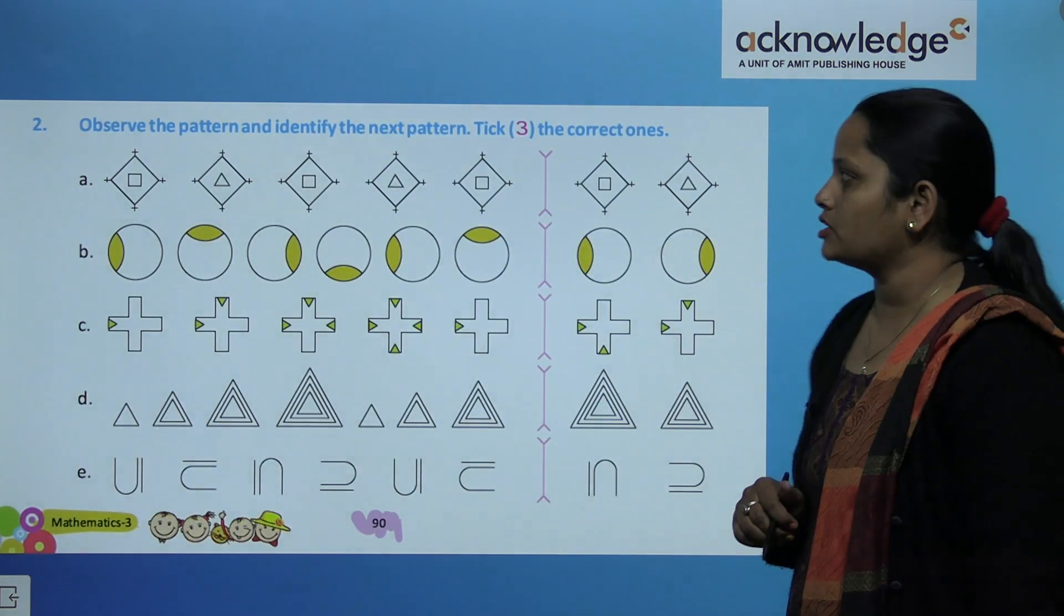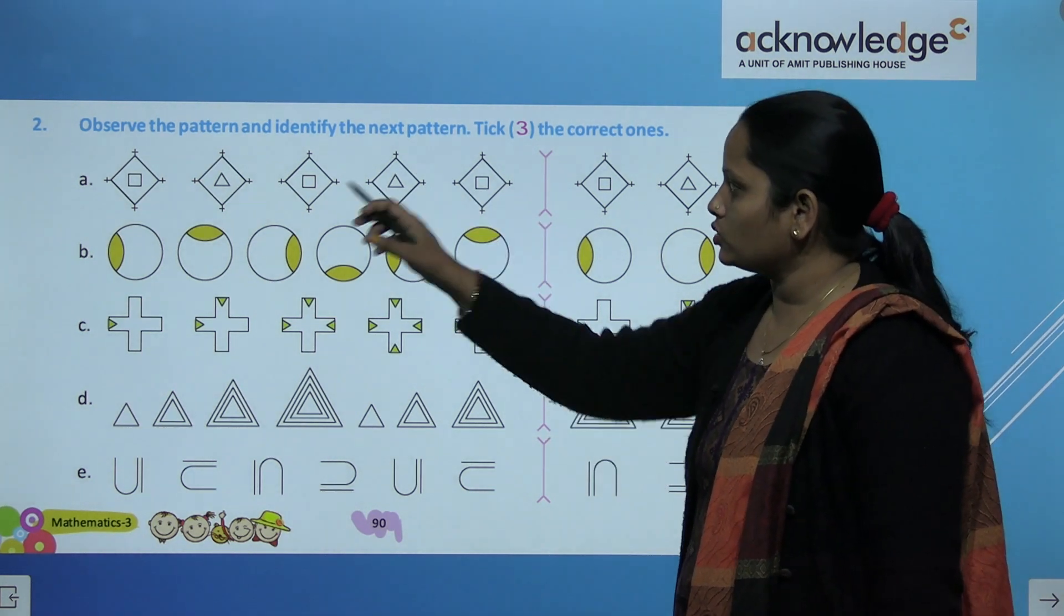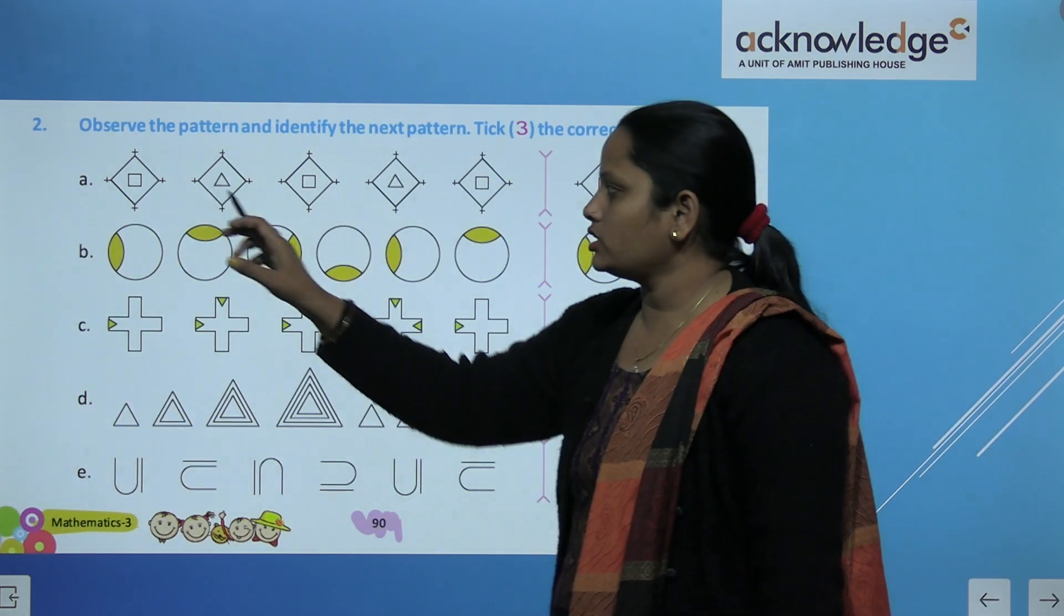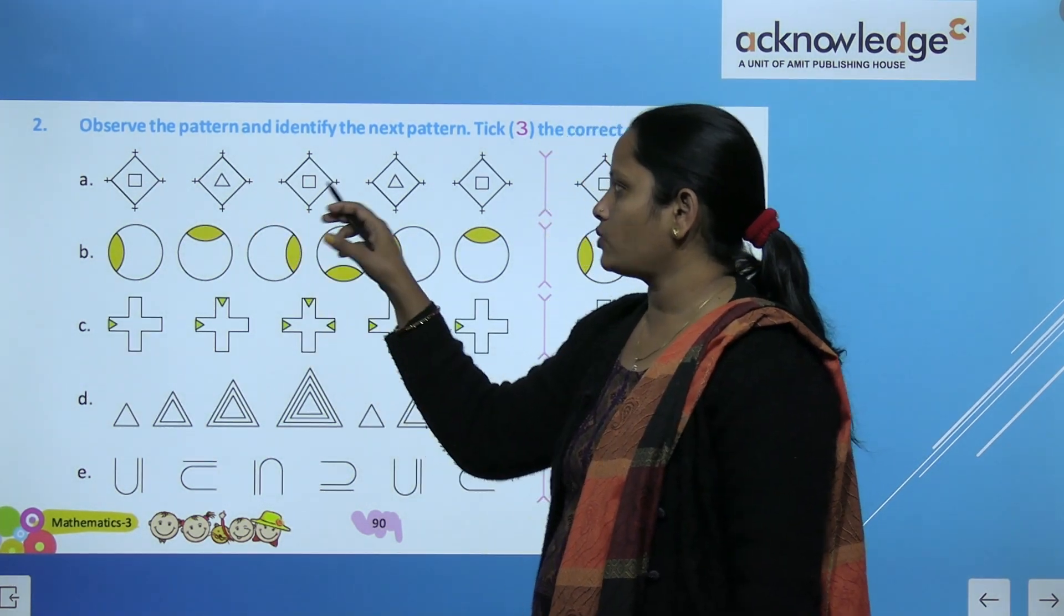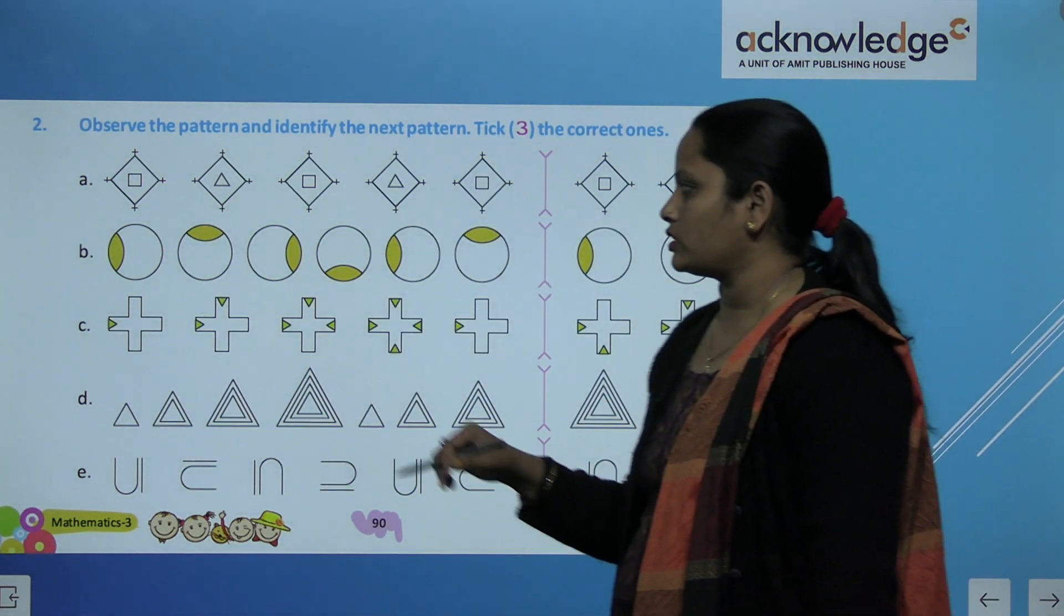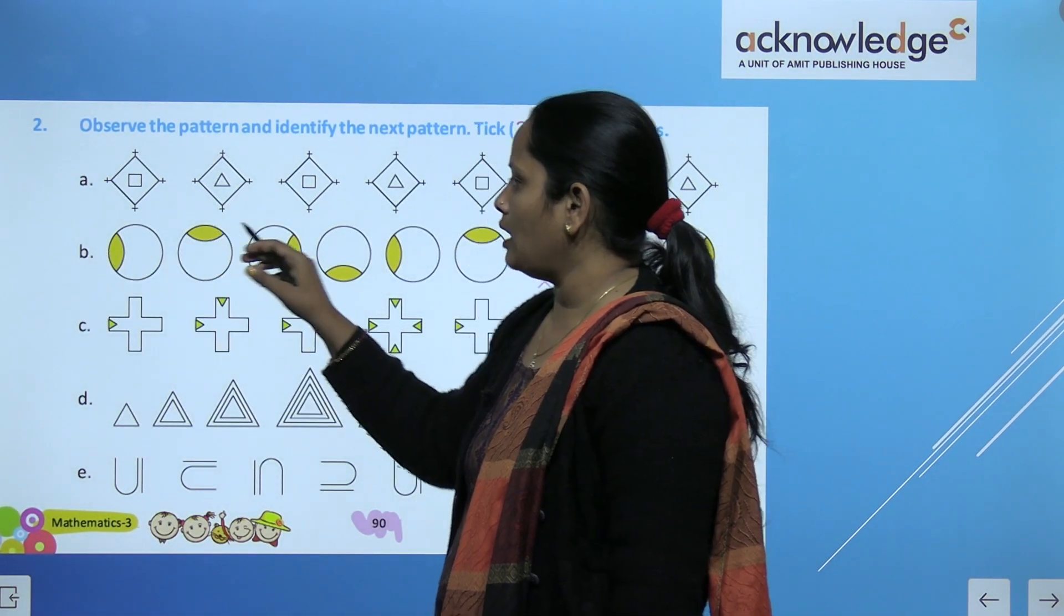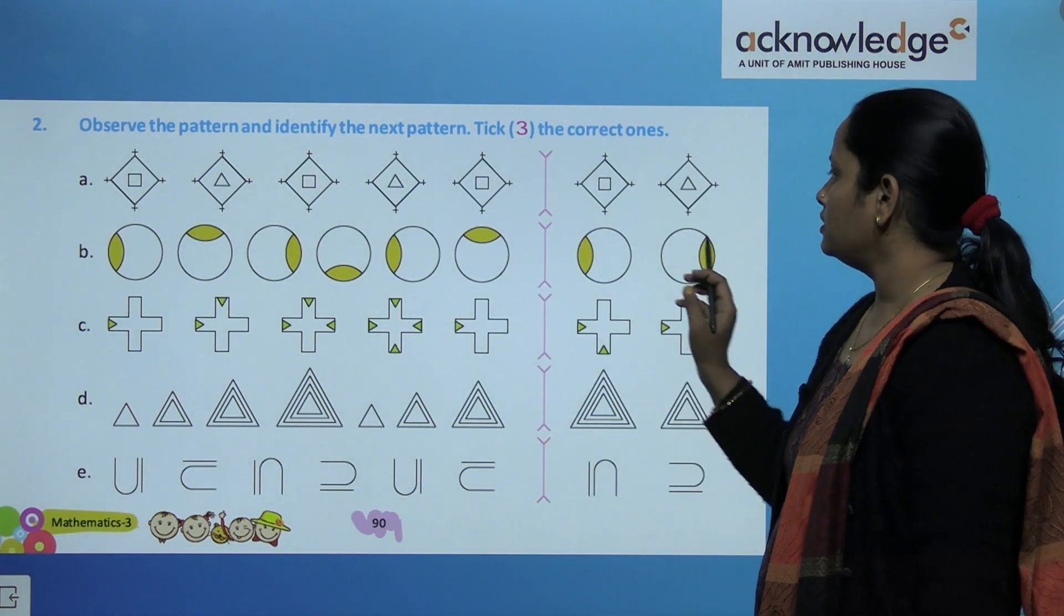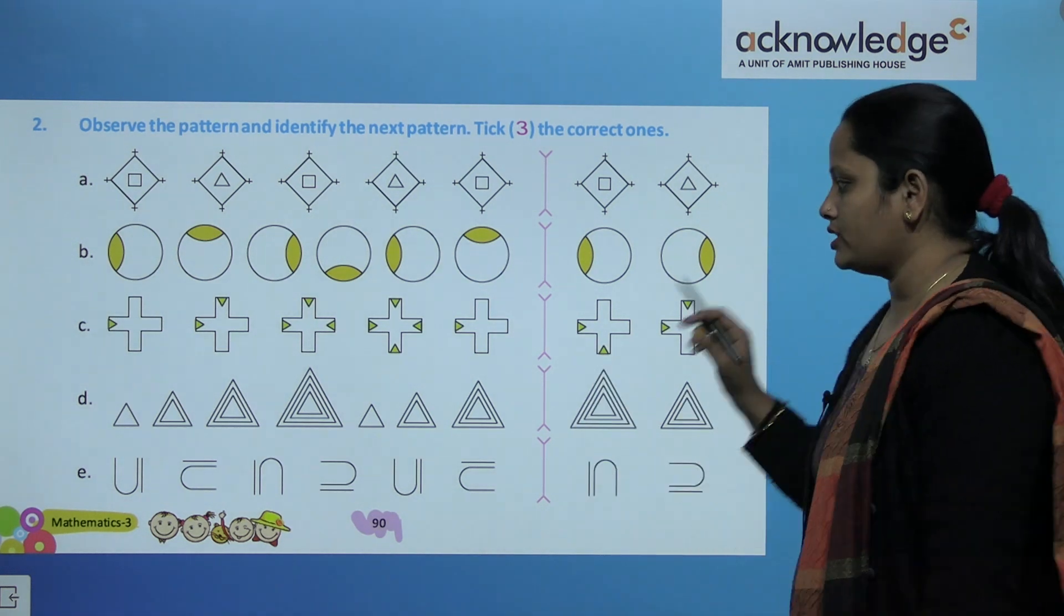Here we have to observe the pattern and identify the next pattern. So pattern ko dekhenge aur in honno mein se choose karenge which will be the next one. So here it's square, triangle, square, triangle, square and then triangle. So this is the correct one. So here it's to the left, up, right, down, left, up, right. So similarly do the rest children.